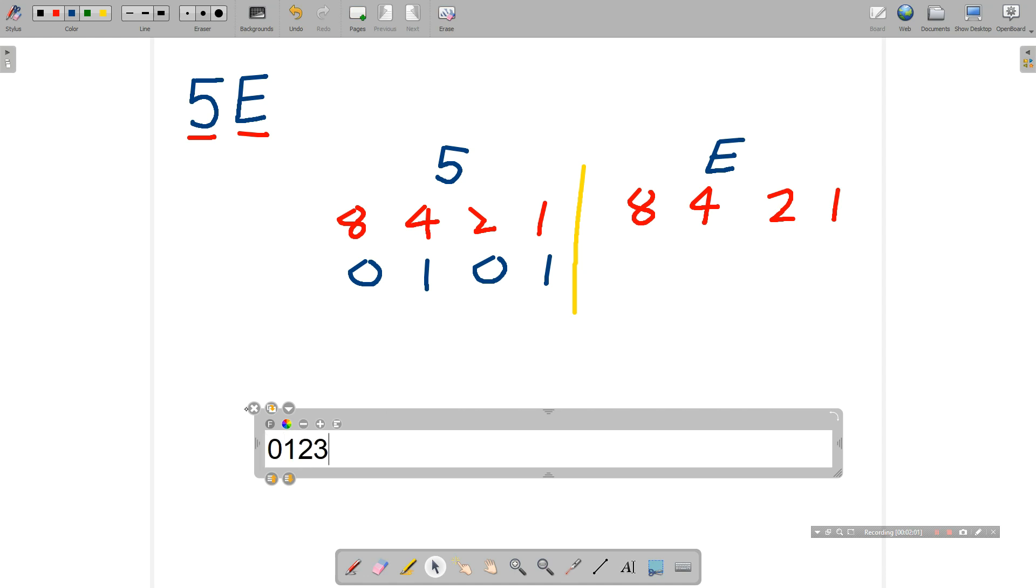So that's 0, 1, 2, 3, 4, 5, 6, 7, 8, 9, and then A, B, C, D, E, and F. F being the last or the highest digit in hexadecimal.